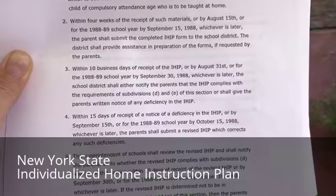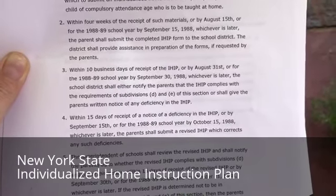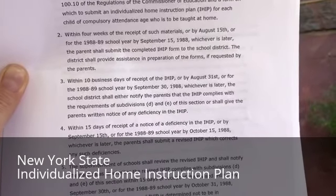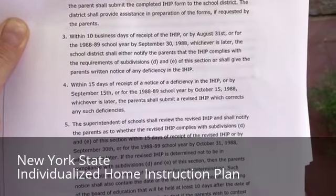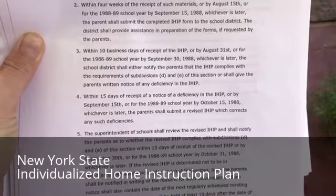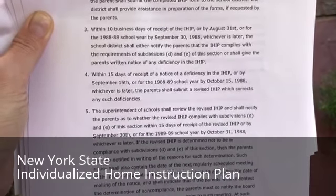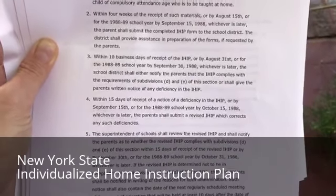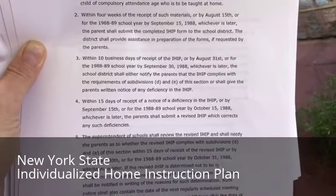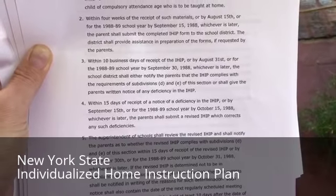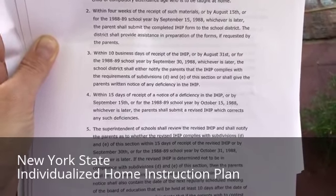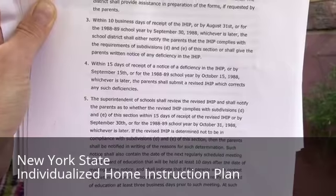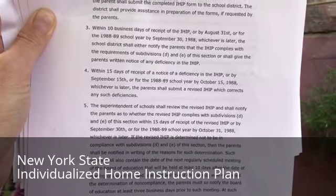Within 10 business days of receipt of the IHIP, or August 31st, whichever is later, the school district shall notify the parents that the IHIP complies with the requirements. Most of the time it's pretty much a rubber stamp process and you're not going to have any issues. Occasionally you have a school district that is particularly persnickety about things. If you run into that situation, you're probably not the only one who's had issues with your IHIP that year — contact your local homeschool organization for support. Oftentimes it's just a matter of having one of their representatives talk to the school district and get things straightened out.